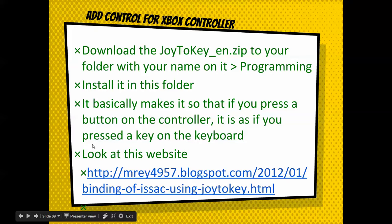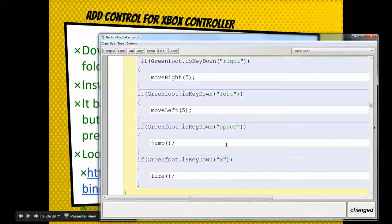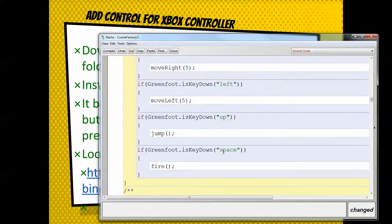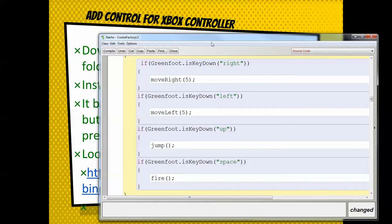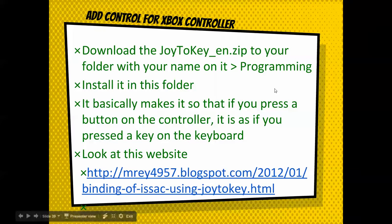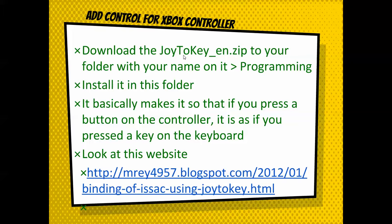That's how you do the tank stick controller. Now let's talk about the Xbox controller. The Xbox controller is trickier because it does not use letters like we're used to on the keyboard — it does some other system. You could get the Xbox controller to work directly with Greenfoot, but it's a huge pain. So what we're going to do instead is download Joy2Key, because when you press a button on the Xbox controller, it turns it into a letter so we can use it just like we've been doing.